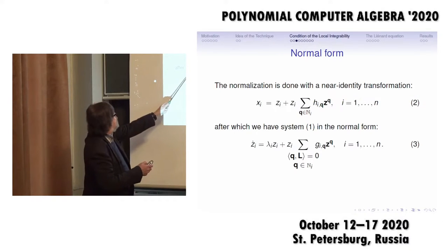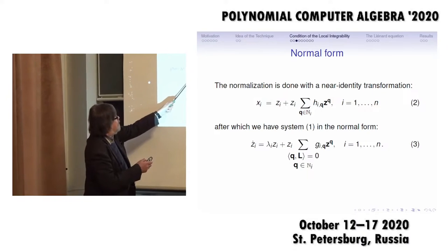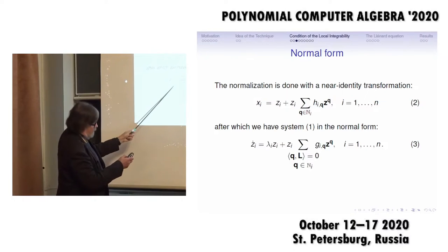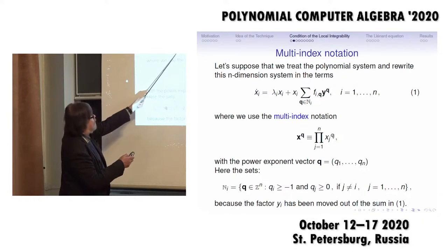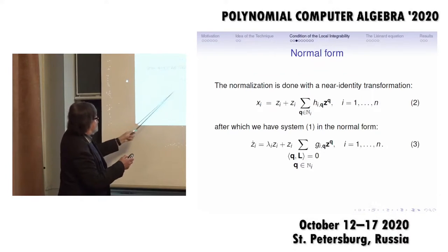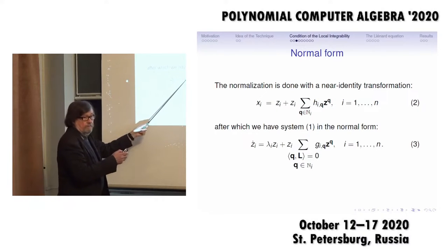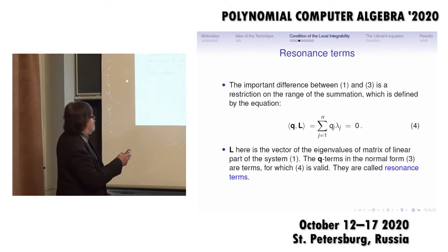This is multi-index notation, variable vector in power of vector. We have a near-identity invertible transformation from variable x to variable z, and after that we have our system in the same form. This is the so-called normal form, and here is only one limitation on the summation in the right-hand side of this equation system, but this is a very hard limitation.